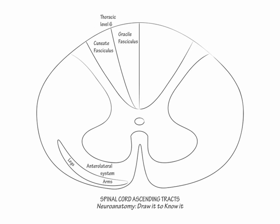It is important to label the ventral commissure between the anterior horns. This is the white matter pathway through which the anterolateral system fibers cross sides of the spinal cord.